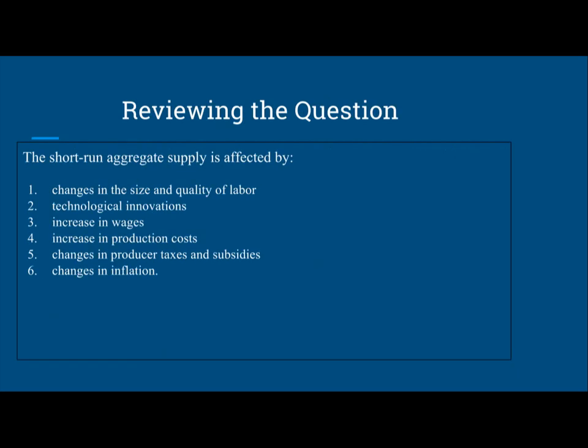Now let's review the question. How does the short-run aggregate supply become affected? Well, there are six factors, and we'll go over them.